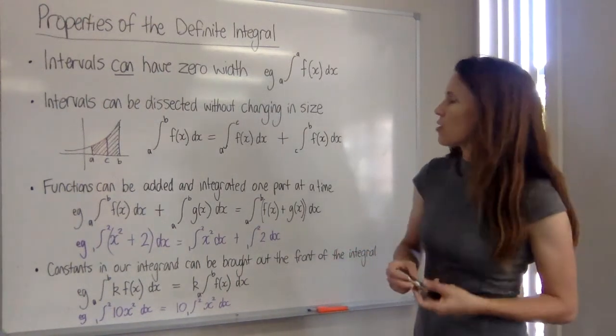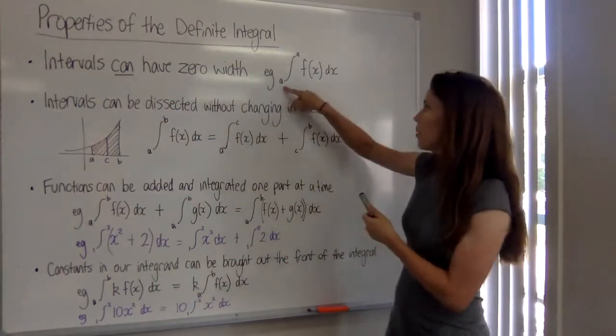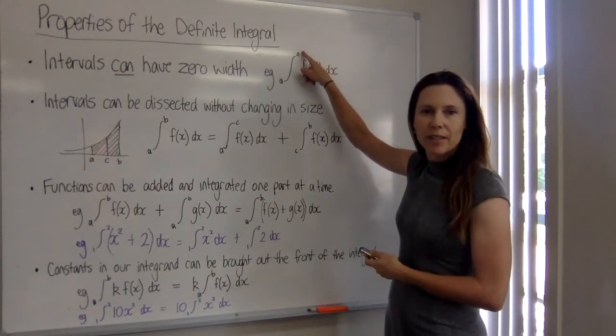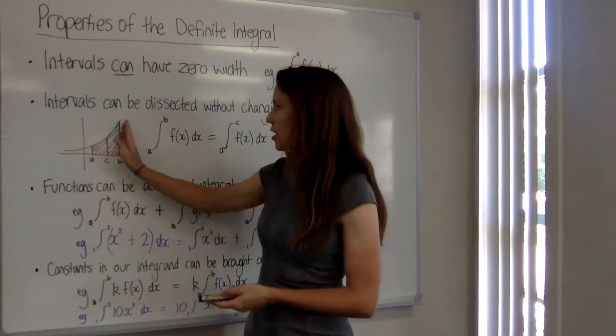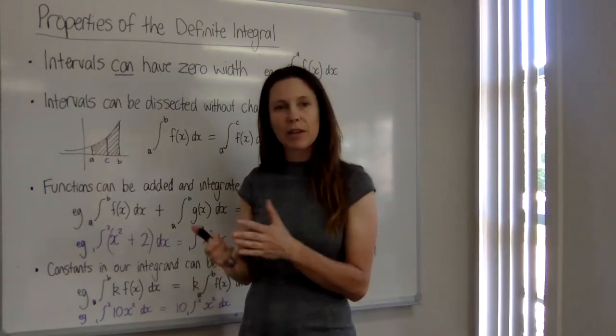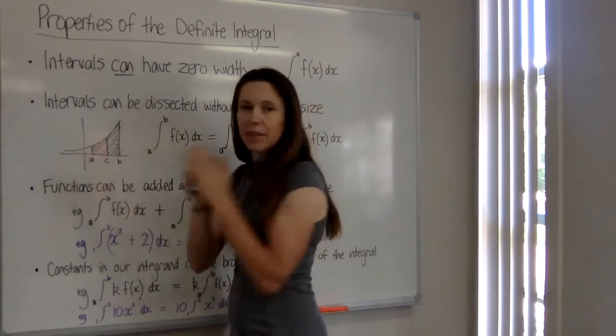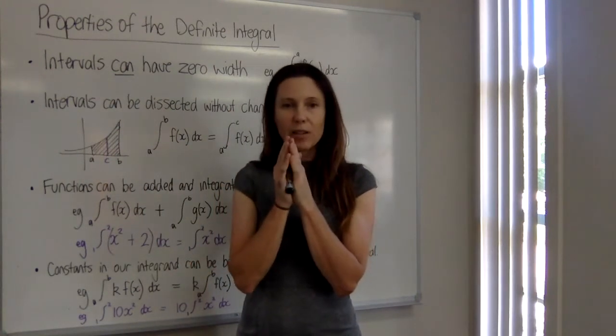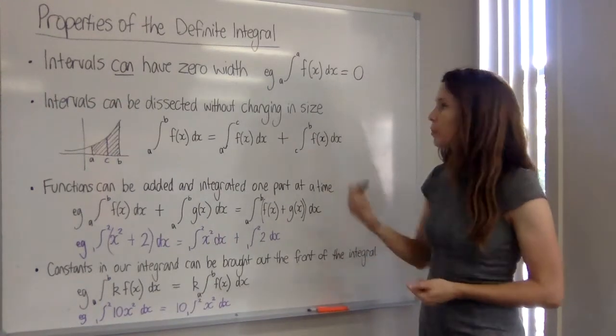It is possible for an interval to have zero width. This would happen if the upper and the lower bounds were exactly the same value. So if we're looking at integrals and thinking of them as something that helps us find the area underneath the curve, then obviously if we're looking at an area that has no space in it at all, then the answer to this will be zero.